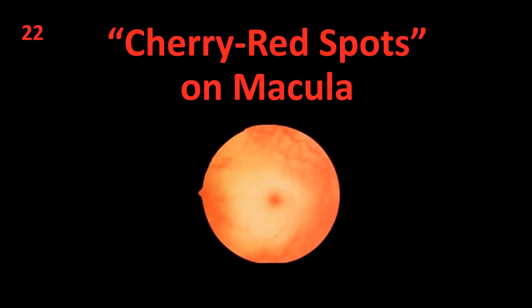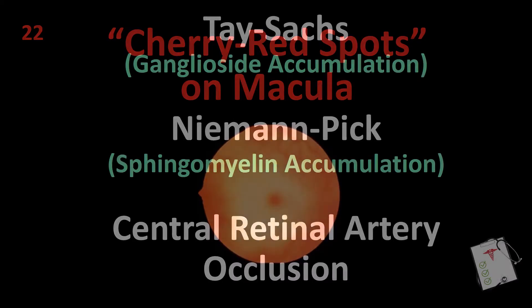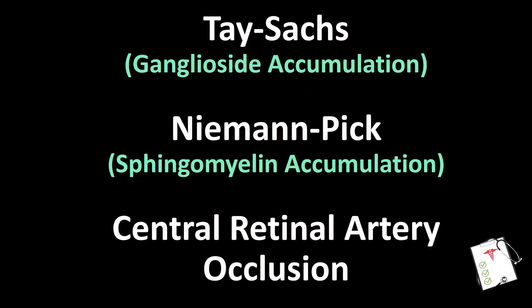Number 22: Cherry red spots on macula. Answer: Tay-Sachs — ganglioside accumulation; or Niemann-Pick — sphingomyelin accumulation; or central retinal artery occlusion.